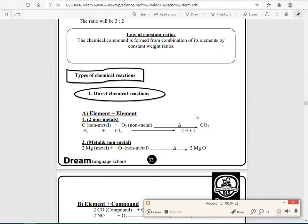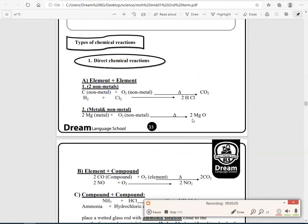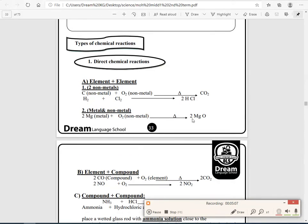Now, let's start by the types of chemical reaction, direct chemical reaction or direct combination reaction. We have two types of direct combination reaction: element plus element, or element plus compound, or even compound plus compound. The element must be two non-metals or metal and non-metal. So, if we begin by two non-metals, C plus O2, which both are non-metals, will give us CO2. H2 plus Cl2 will give us 2HCl, which are both two non-metals.